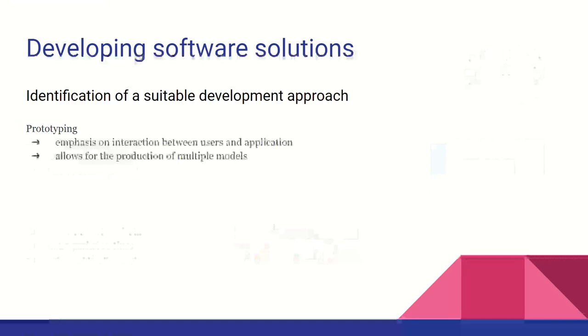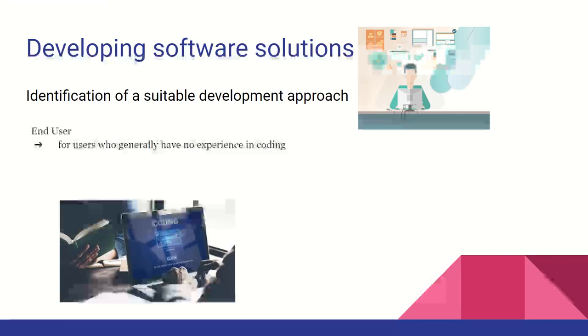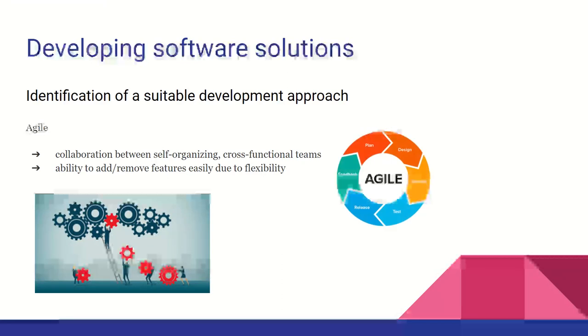Prototyping is used when there is a high emphasis on a project requiring an interaction between users and the application. This approach allows the production of multiple models that can be used in the creation of the final product. End user development is used in a project that requires the manipulation of data by users who generally have limited experience in coding. We commonly see this approach with small businesses developing solutions through applications such as Microsoft Access or Excel. An agile method is a set of methods and practices where solutions evolve through collaboration between self-organizing, cross-functioning teams. This is commonly used when a project has a relatively small scope of development. Clients can add or remove features due to the flexible nature of that development.